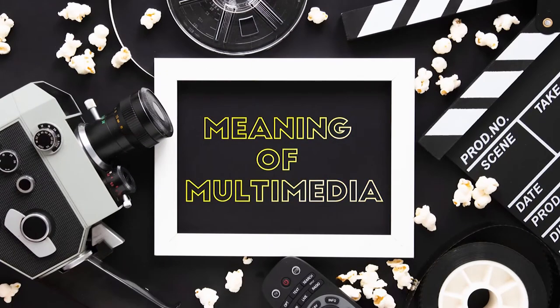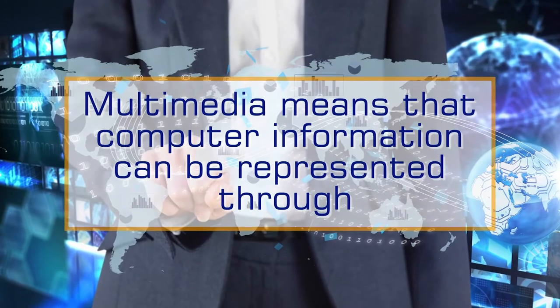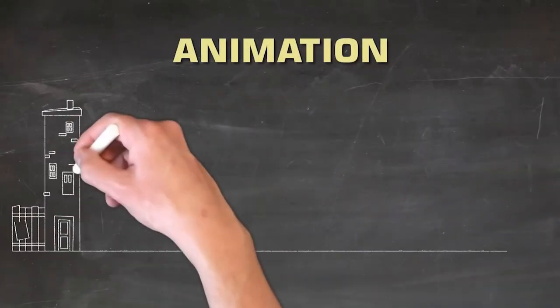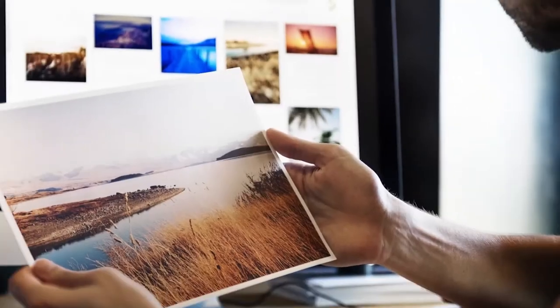Meaning of Multimedia: Multimedia means that computer information can be represented through audio, video and animation in addition to traditional media such as text, graphics, drawings and images. A general definition is: multimedia is the field concerned with the computer-controlled integration of text, graphics, drawings, still and moving images, video, animation, audio and any other media where every type of information can be represented, stored, transmitted and processed digitally.